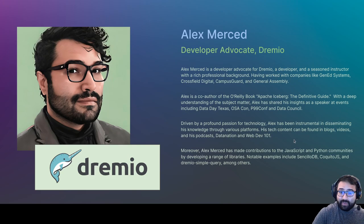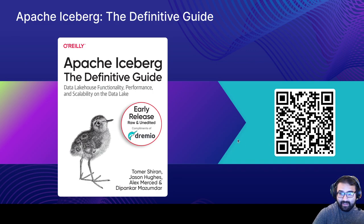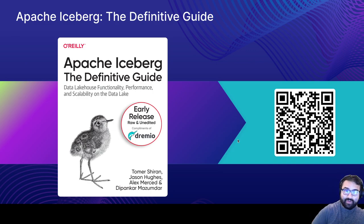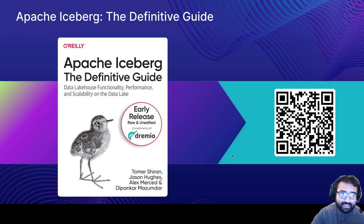I also host podcasts, which we'll talk about in a moment. But first, I want to mention that I'm also one of the co-authors of Apache Iceberg: The Definitive Guide. You can get an early copy of that book by scanning the QR code. This book is coming out from O'Reilly early 2024, so get yourself an early copy today.